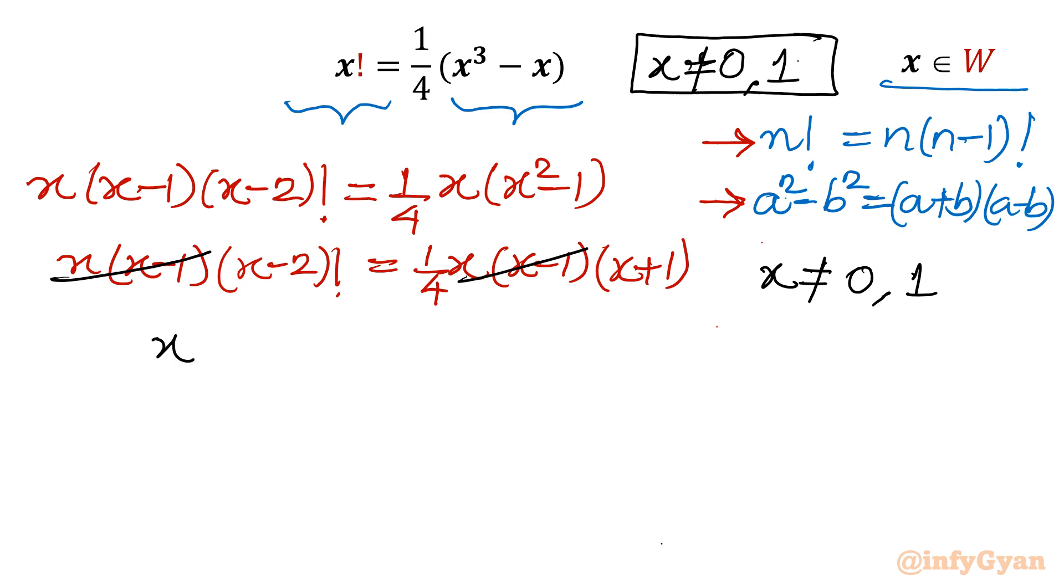What is left now? x minus 2 factorial equal to 1 over 4 times x plus 1. Now multiply this equation with 4. So 4 times x minus 2 factorial equal to x plus 1.